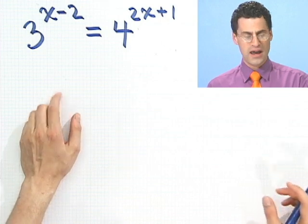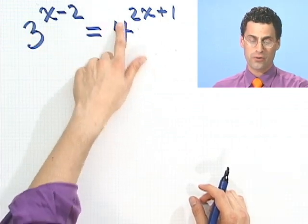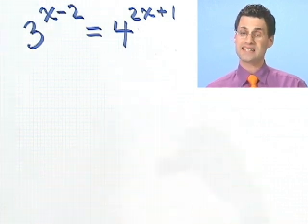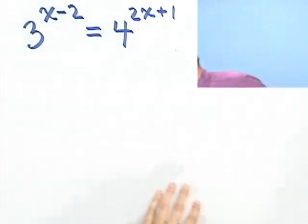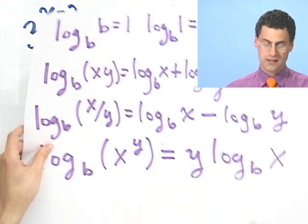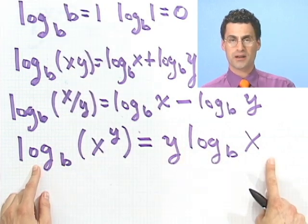and I want that to equal 4 raised to the 2x plus 1. And I want to find out the value for x which actually makes this true. Well there's no way for me to take the 3 and make it into a 4 to a power, or a 4 and make it into a 3 power in some sort of easy, straightforward way. So what would I do? Well here's the key idea. The key idea is to go back to these formulas, and in particular this one.